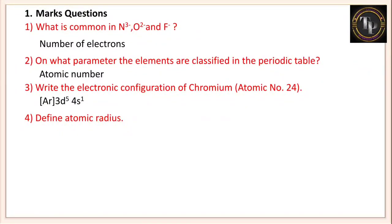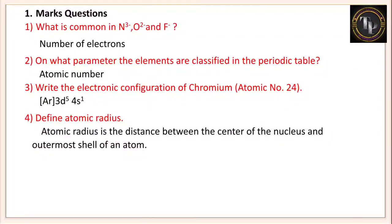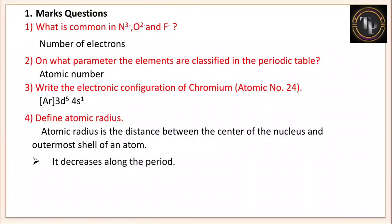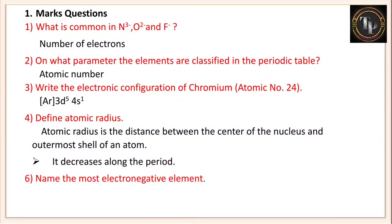Define atomic radius. In mathematics, radius is the distance between the center of a circle and its circumference. Similarly, atomic radius is the distance between the center of the nucleus and the outermost shell of an atom. It decreases along the period — moving left to right — and increases down the group, from top to bottom.